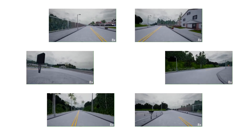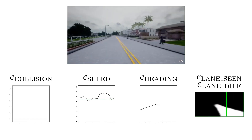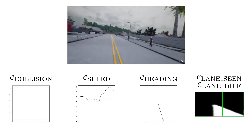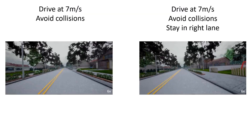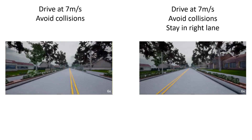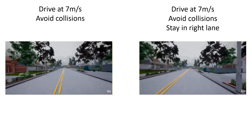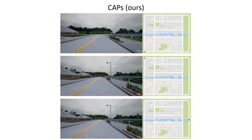We now present experimental results. We first consider autonomous driving in the CARLA simulator. Data was gathered by running deep Q-learning for the sole task of collision avoidance. Using this dataset, the following event cues were labeled: collision, speed, heading, whether the right lane is visible, and the distance of the right lane to the center of the image. The CAPS model was then trained to predict these event cues. To highlight the flexibility of CAPS, we used the same CAPS model to accomplish two different tasks. The CAPS policy on the left drives in both lanes, while the CAPS policy on the right drives only in the right lane, showing that CAPS can achieve different policy behaviors at test time.